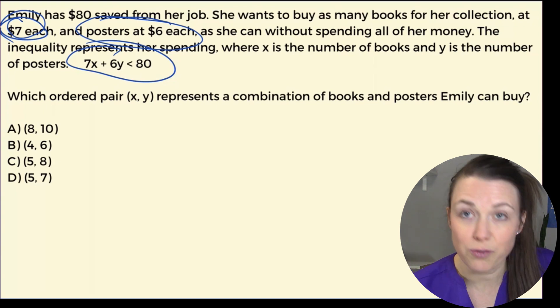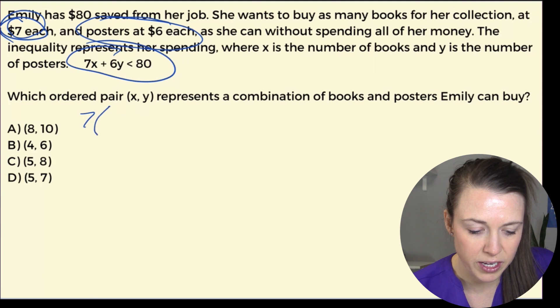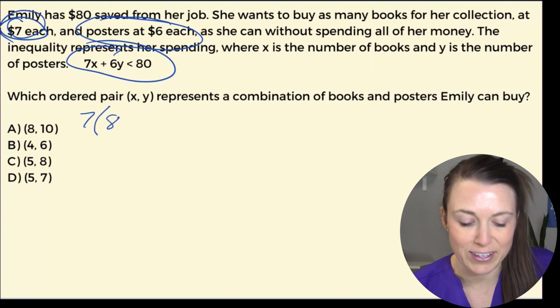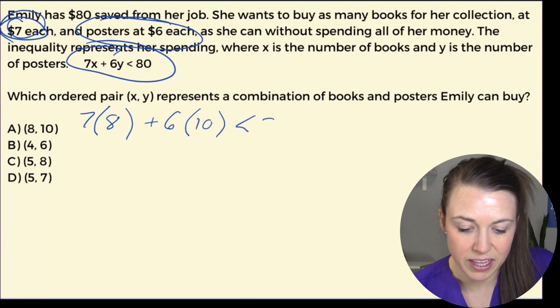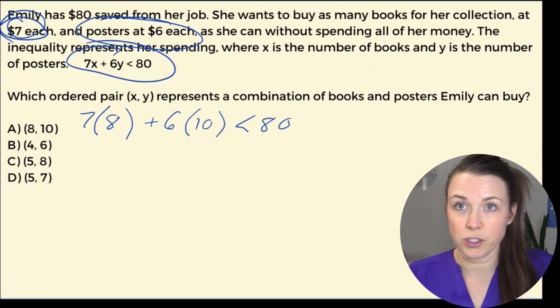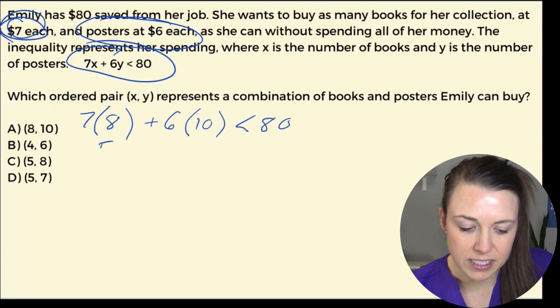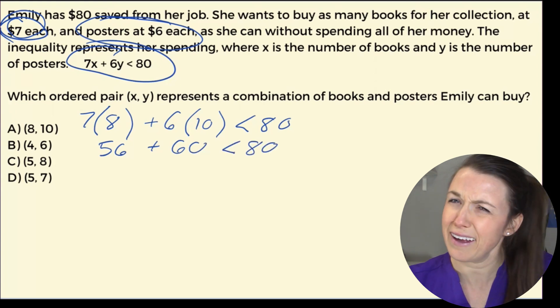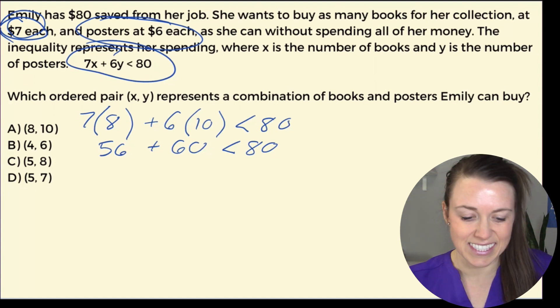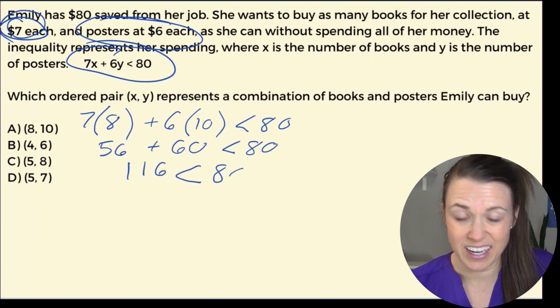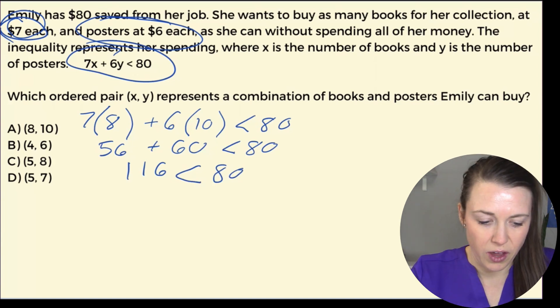I'm going to rewrite this for the first one. I have 7 times 8 plus 6 times 10. That number needs to be less than 80. So I just multiply, 7 times 8. I always like to think about 5, 6, 7, 8, and that means 7 times 8 is 56. So I have 56 plus 6 times 10 is 60, and all of that is less than 80. Oh no, it's not. If you add 56 and 60, you're going to get 116. Is that less than 80? No, it's not. So A is out of the question.